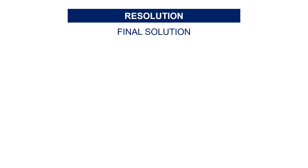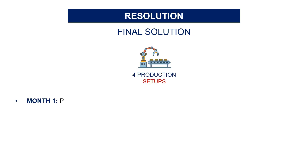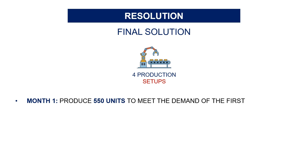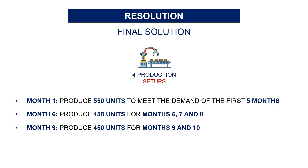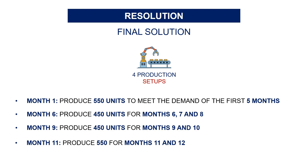So the final solution requires 4 production setups. You start in the first month and produce 550 units to meet the demand of the first 5 months. Then in month 6, you produce 450 units for months 6, 7, and 8. Then for month 9, you produce 450 units for months 9 and 10. And finally, in month 11, you produce 550 units for the last 2 months.